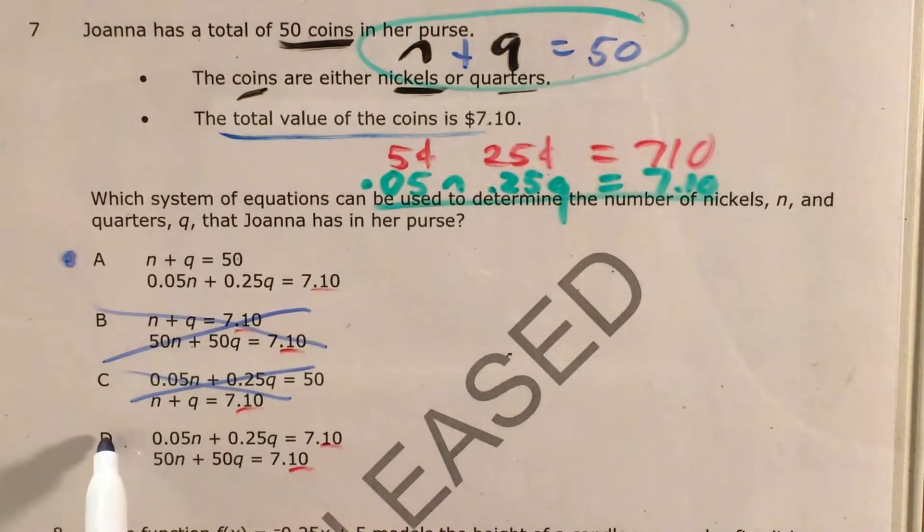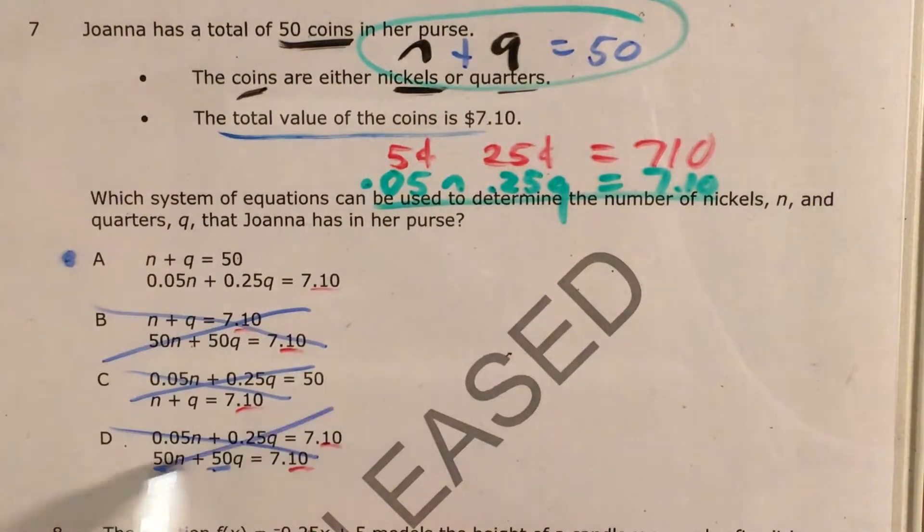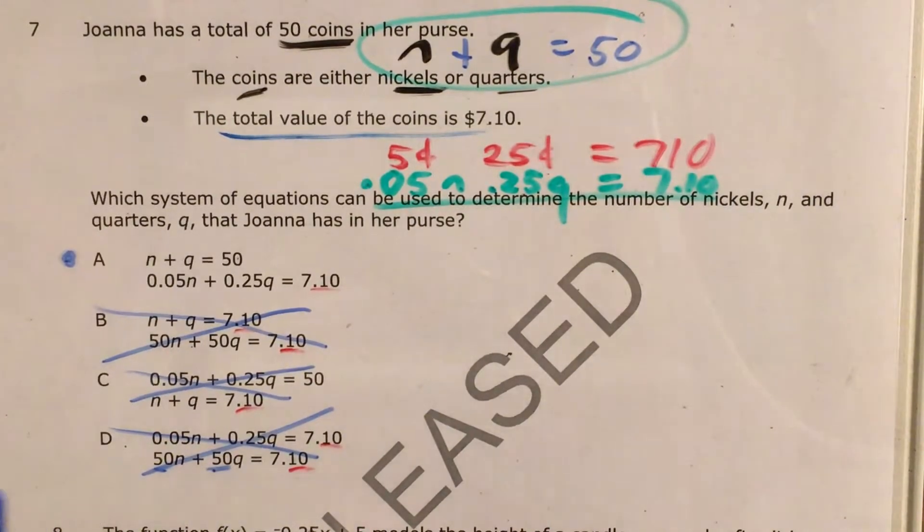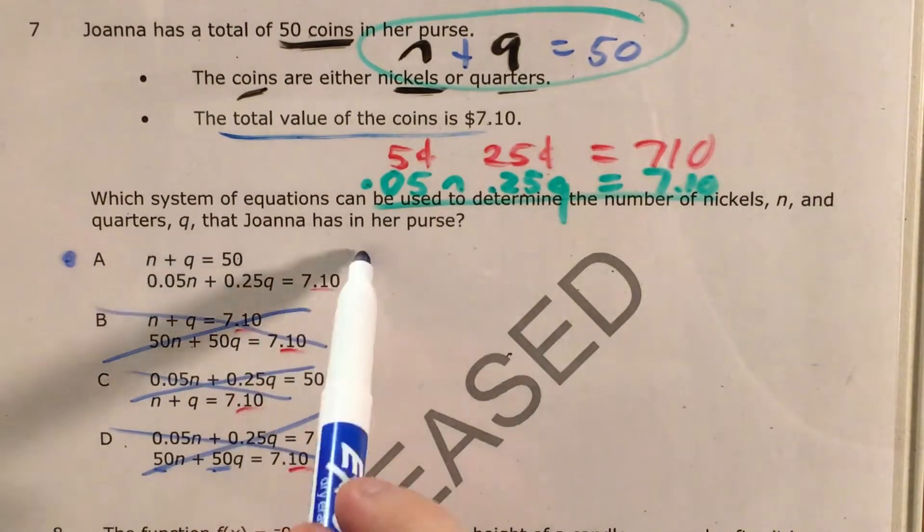And finally, for choice D, our 50s are in completely the wrong place. It was just the nickels and the quarters, not 50 nickels and 50 quarters. And it might be pretty clear once you think about it for a little bit that 50 nickels and 50 quarters don't equal $7.10. So anyway, now that that's all done, we've knocked out B, C, and D.